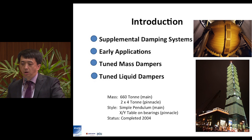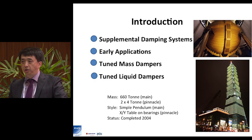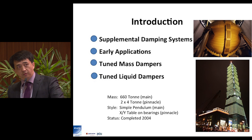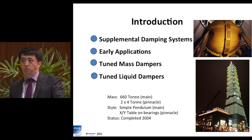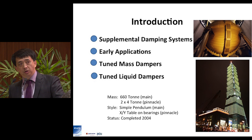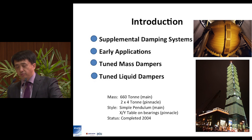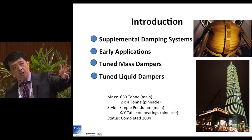There are a lot of codes, especially in China, where the code requirement for 10 years is very restrictive. For office towers, you need 20–25 milli-G for the top occupied floor; for residential, 15 milli-G. There is also ISO criteria and AIJ criteria from Japan. These are very popular criteria that people use as the basis for using a damping system.